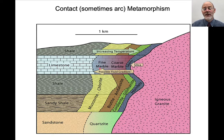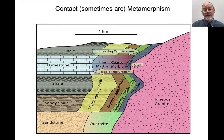If it's a limestone, then when it metamorphoses it forms marbles. If it's a shale or sandy shale, then it can form these rocks that we call metapelites. Pelite is an old term for mudstone, so metapelites are metamorphosed mudstones. They have characteristic mineral assemblages associated with them.